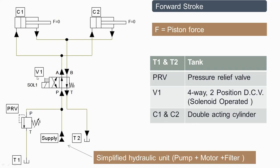C1 and C2 are double-acting cylinders. V1 is a four-way two-position direction control valve and it is solenoid operated — this is the symbol for solenoid operation. By default this valve is always in the right envelope mode. PRV is the pressure relief valve; when the system pressure increases it will relieve the fluid through this valve, and it is normally closed.